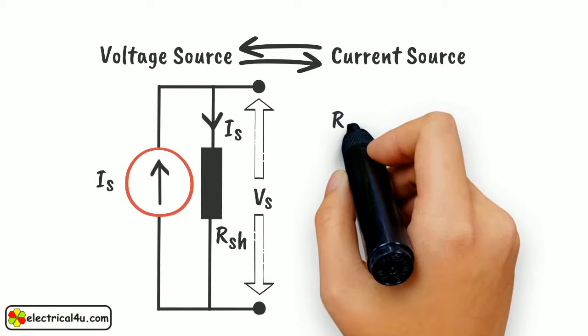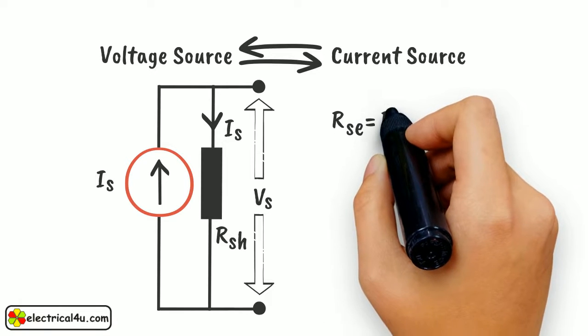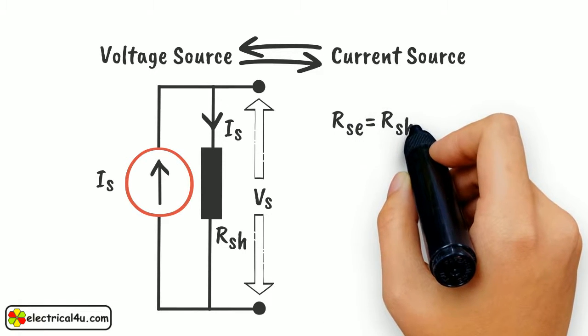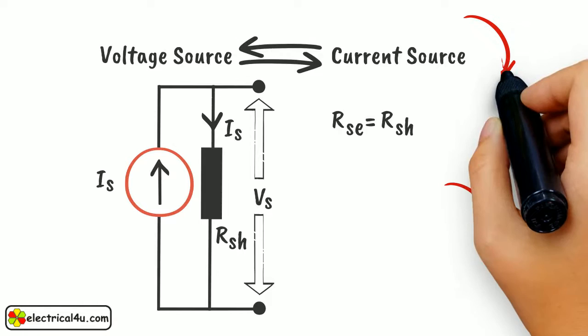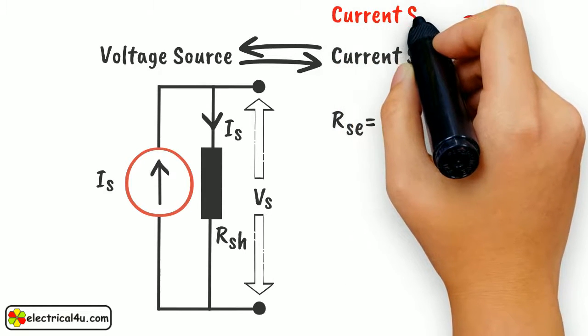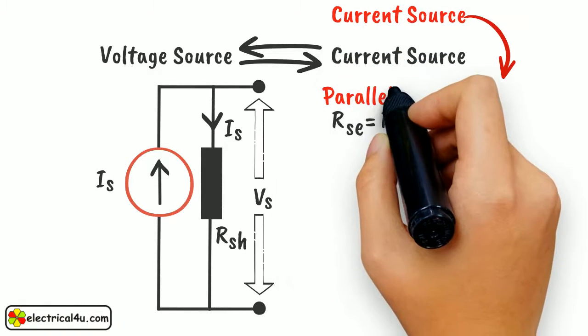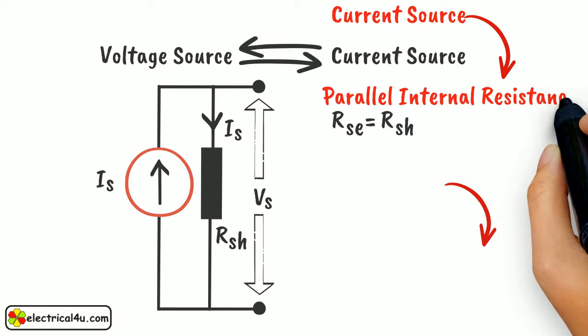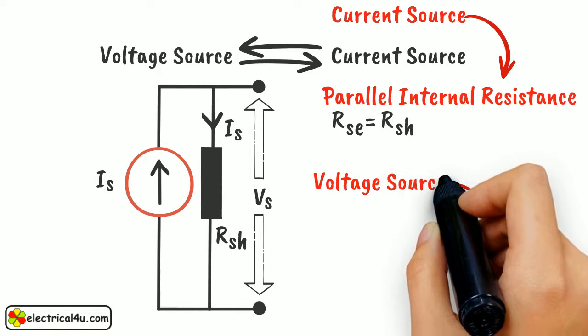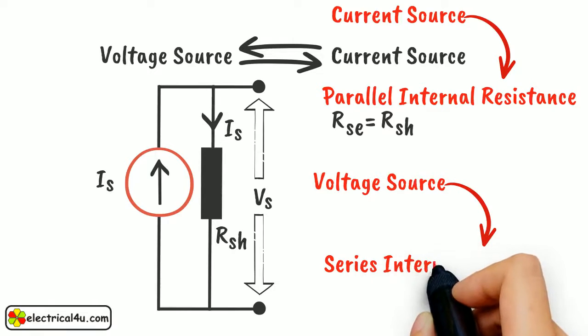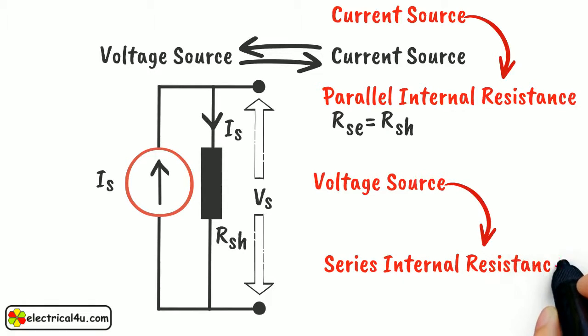So internal resistance of the voltage source would be connected in parallel with the ideal current source to get the equivalent current source of the voltage source. And similarly, the parallel internal resistance of the current source would be connected in series with the voltage source as internal resistance to get the equivalent voltage source of the current source. Hope you understood the technique.